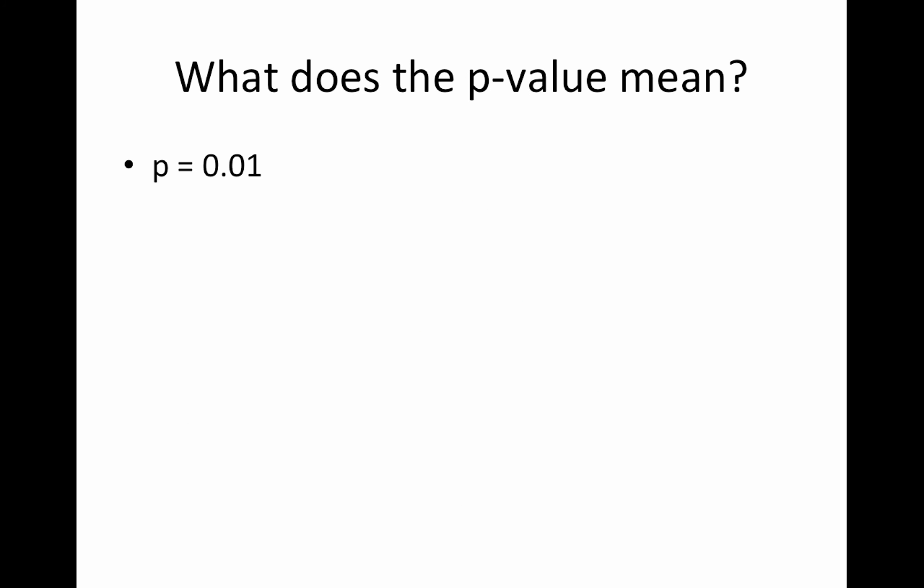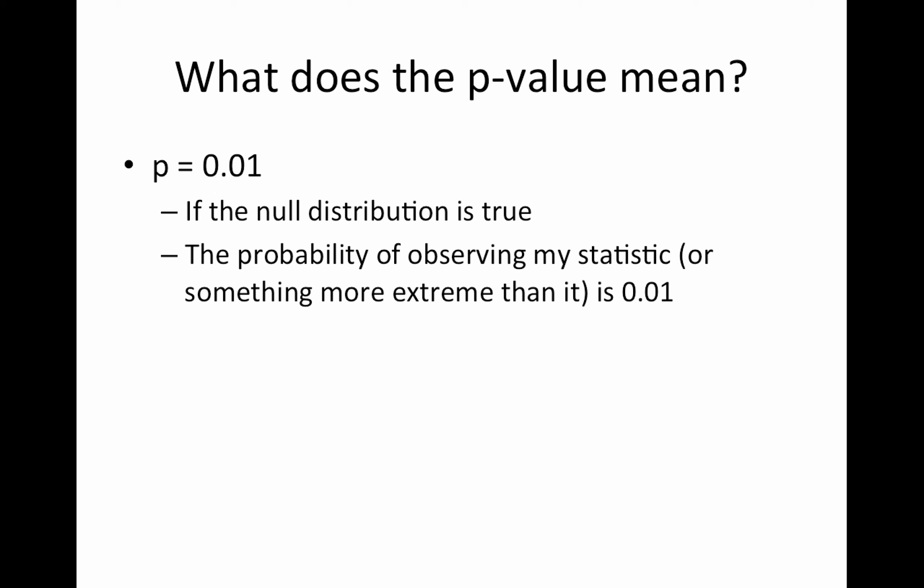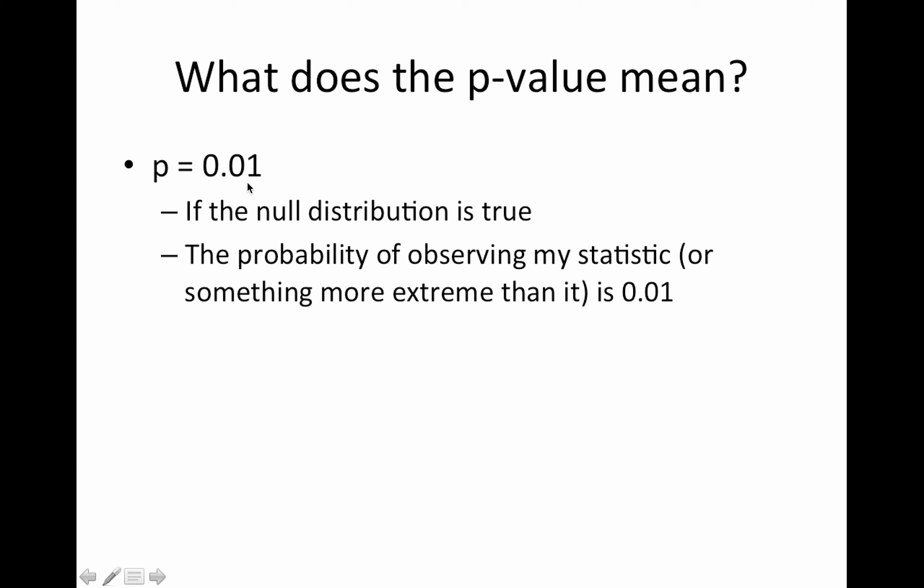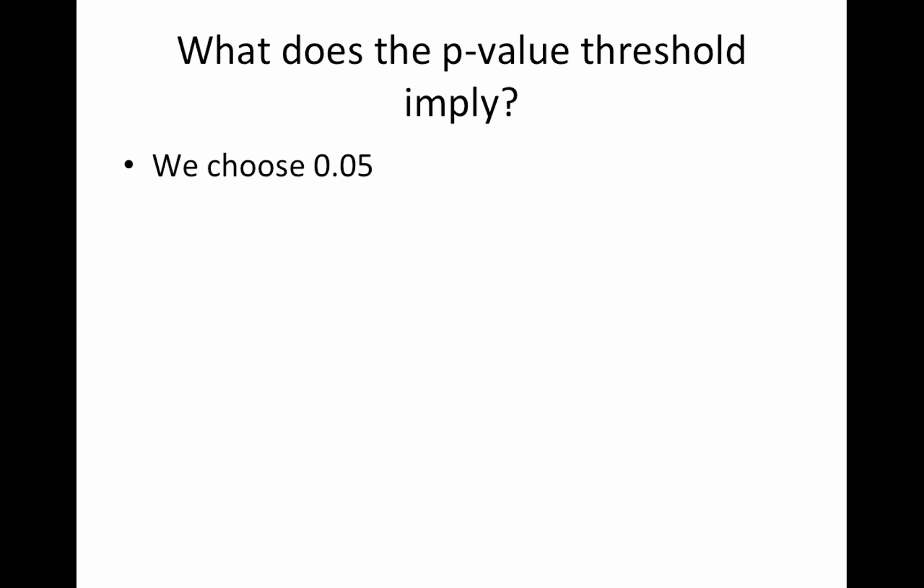So what does the p value mean? If I have a p value of 0.01, it means that if the null distribution is true, the probability of observing my statistic or something more extreme than it is 0.01. Importantly, it does not reflect the probability that the null is true. I posted a thing on the Mumford Brainstats Facebook group about a study in Spain that looked at how frequently scientists misinterpreted the p value. It was pretty common for it to be misinterpreted. So don't let that happen to you.